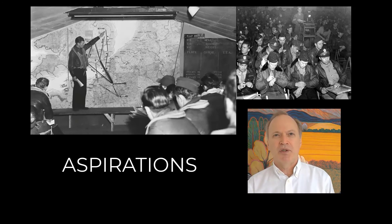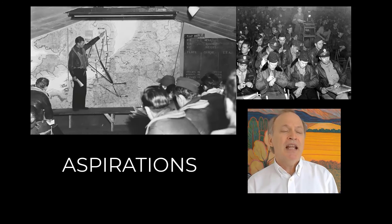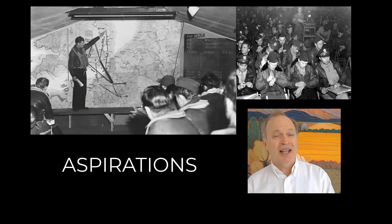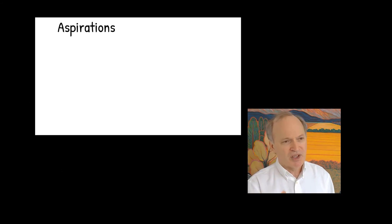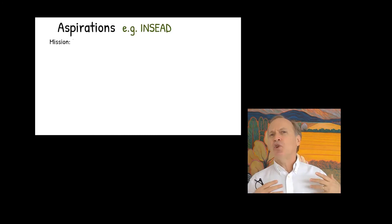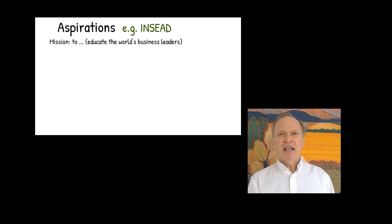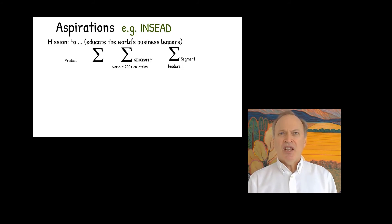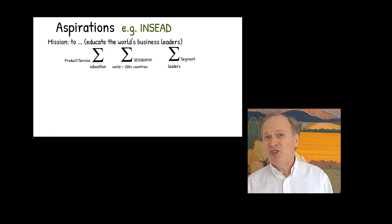Typically you'll look on a website and they'll have a mission statement. This should never be drafted by a communications department — it should be drafted by the strategic planners, because a well-crafted mission is a wonderful thing. It can be very motivating, but more importantly for AI and machine learning it gives you a constraint on what's possible. For example, let's say INSEAD's mission is to 'educate the world's business leaders.' That looks familiar — 'educate, world's, business' — that's the sigma, sigma, sigma: the three sigmas.